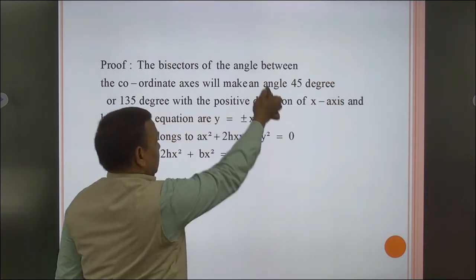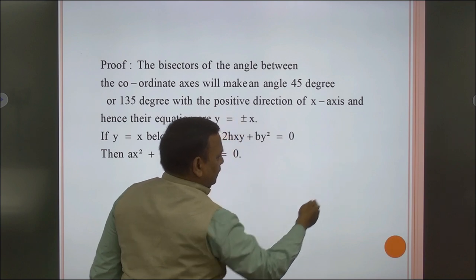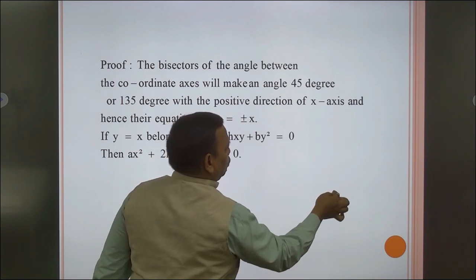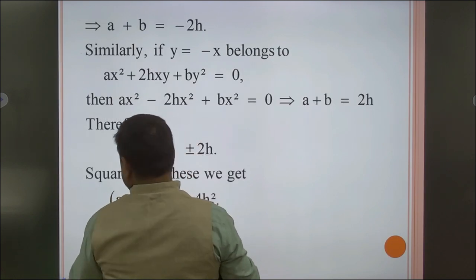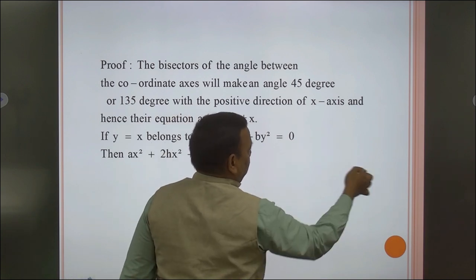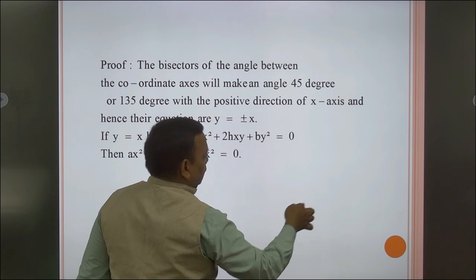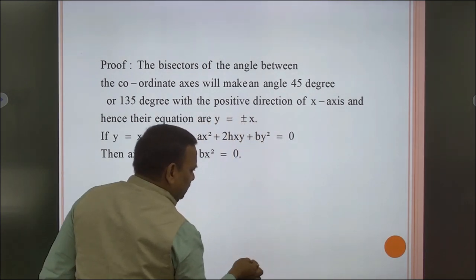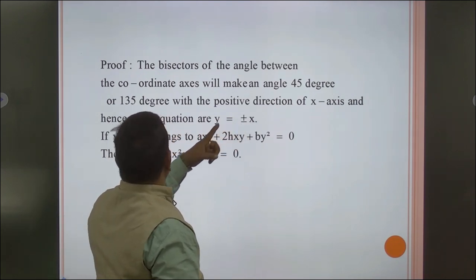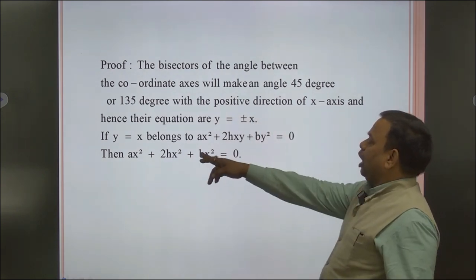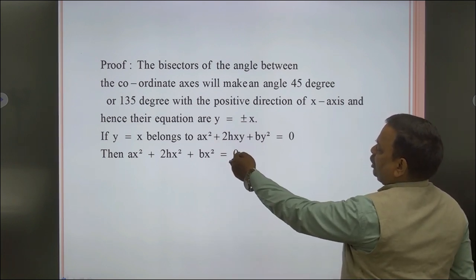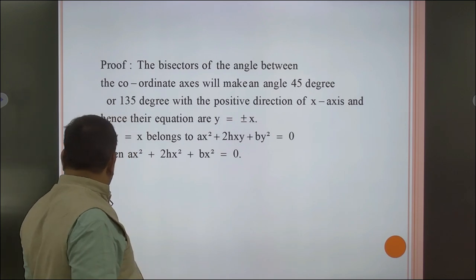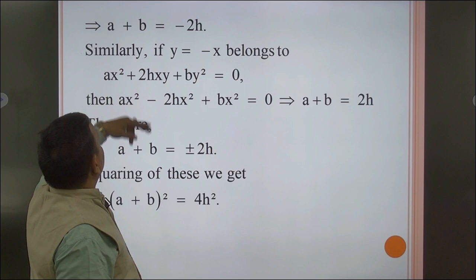If y = x, this line belongs to ax² + 2hxy + by² = 0. Substituting: ax² + 2hx² + bx² = 0, giving the condition a + b = −2h. Similarly, if y = −x, then ax² − 2hx² + bx² = 0, which gives a + b = 2h.